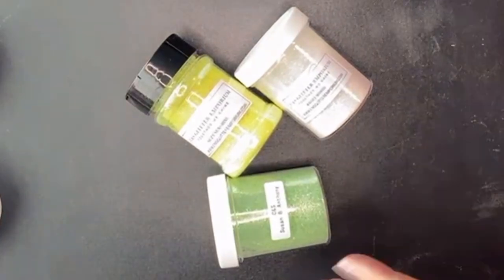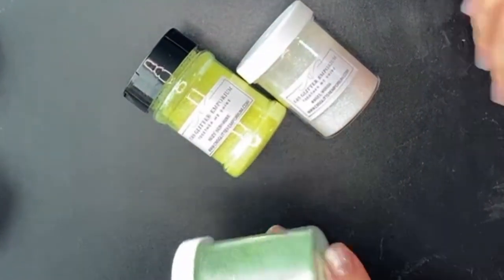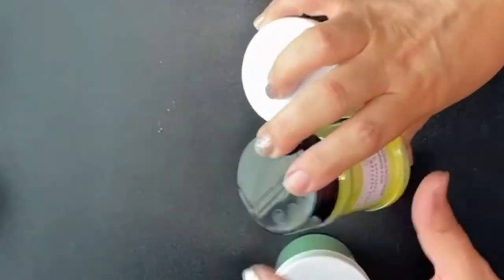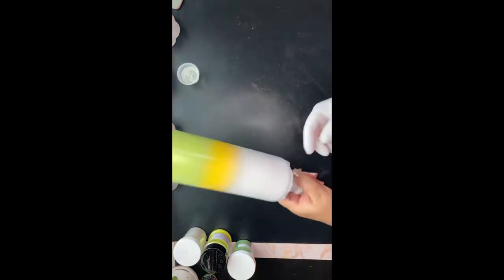Today we'll be using glitter from C&S Glitter Emporium: Susan B. Anthony, Susie Sunshine, and Angel Wings. These are all linked down in the description below for you. Here we're going to start the epoxy process.